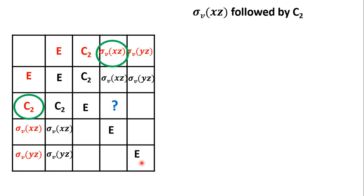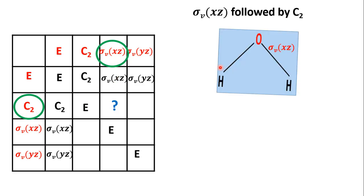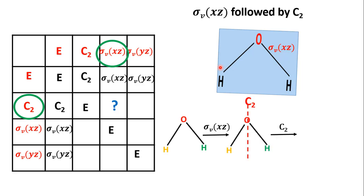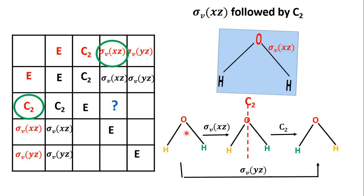Now, σVxz followed by C2: σVxz is the molecular plane, so the position of the atoms is not changed. When you then do C2, the atoms are interchanged. The net result of these two operations is σVyz. There is a condition in mathematical groups: no operation should be repeated along a row or column. Since C2 is already present, you will not get C2 again — you get σVyz.